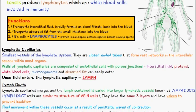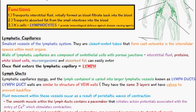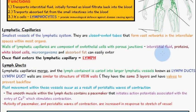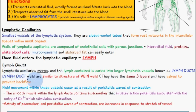The next size up we have lymph ducts. The lymphatic capillaries merge and join together, and the lymph contained is carried into a larger lymphatic vessel known as a lymph duct. The lymph duct walls are similar in structure to the vein wall, so they have the same three layers, and they have valves as well in place to prevent backflow of lymph.